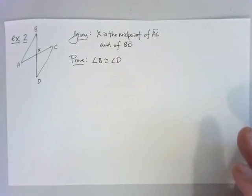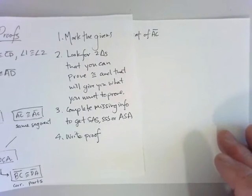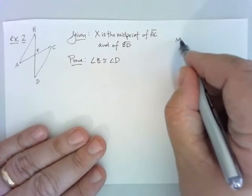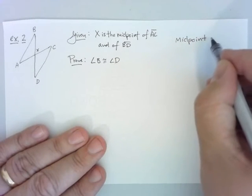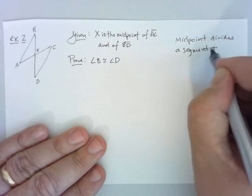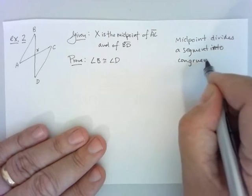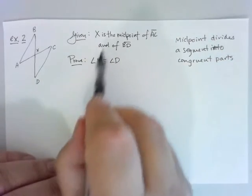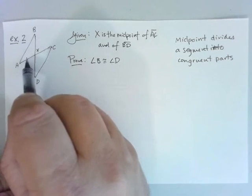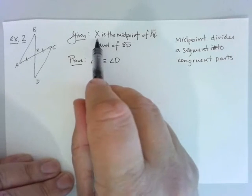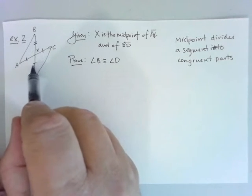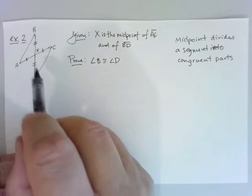Here's my second example. My first step is to mark the givens: X is the midpoint of AC and of BD. Midpoint divides a segment into congruent parts. So X being the midpoint of AC means AX is congruent to XC — I can tick-mark those. It also says X is the midpoint of BD, so BX is congruent to XD — I can tick-mark those too. That finishes marking my givens.